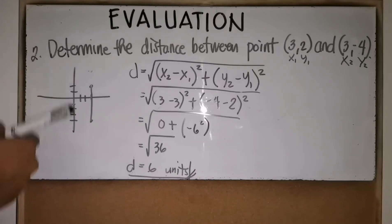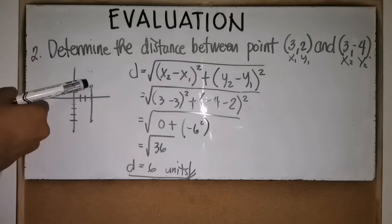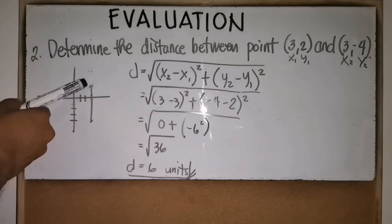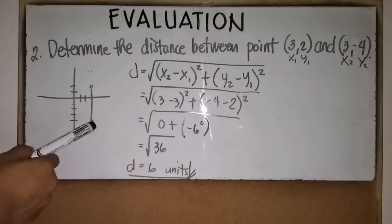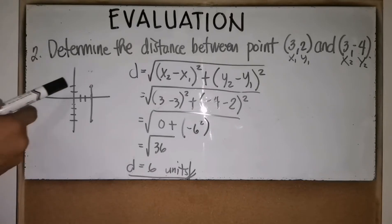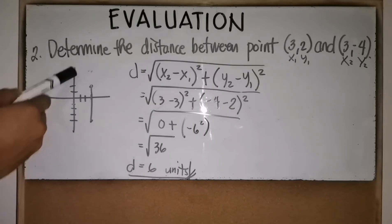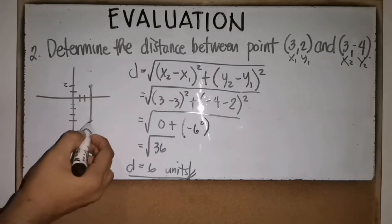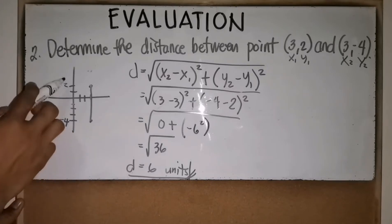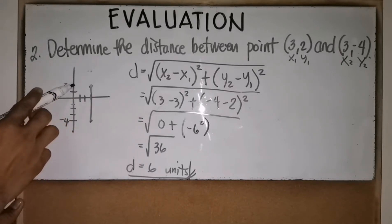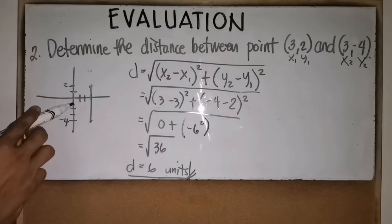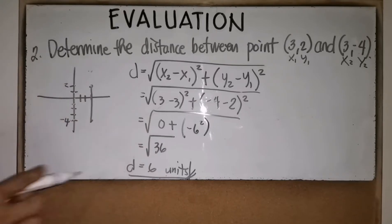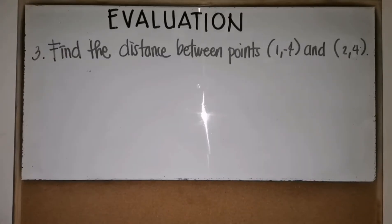We can also use a shortcut method. Since the two points form a vertical line when graphed, you can simply count along the y-axis from one point to the other. From y = 2 down to y = -4, counting gives 1, 2, 3, 4, 5, 6 — confirming the distance is 6 units.